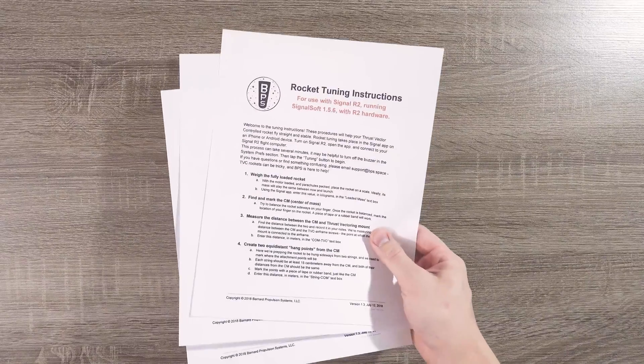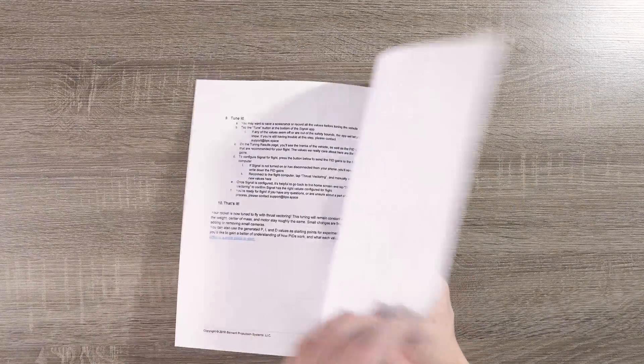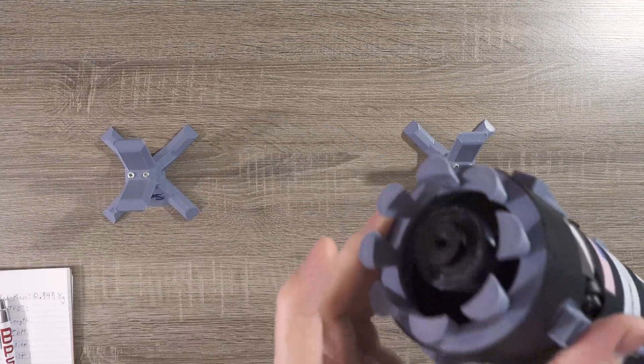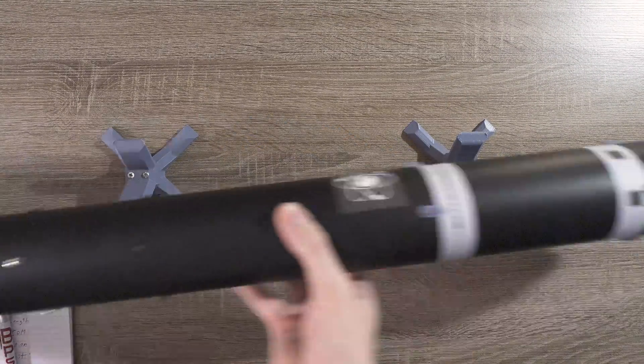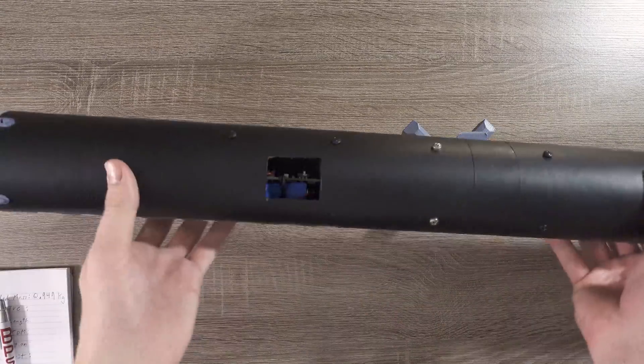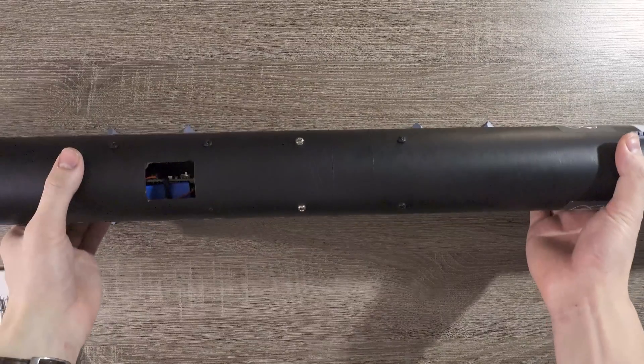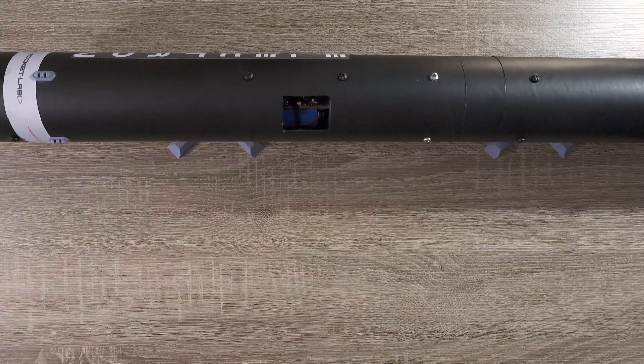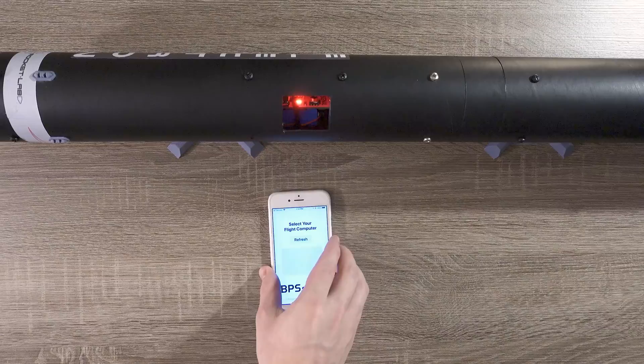To start, you can follow along with the rocket tuning instructions online. There's a link to them in the description down below. Before you begin tuning, make sure your rocket is ready for flight. The motor should be inserted and the parachutes should be packed. Every physical thing about the rocket should be roughly the same between now and launch. Then boot the flight computer up and open up the signal app.